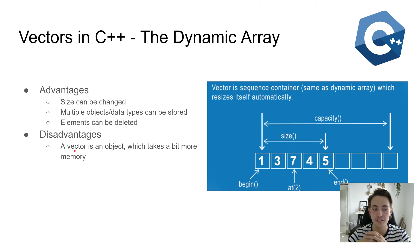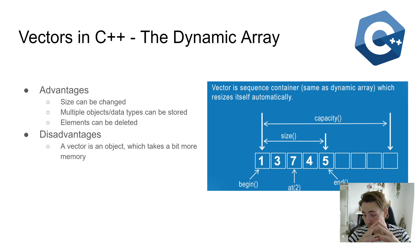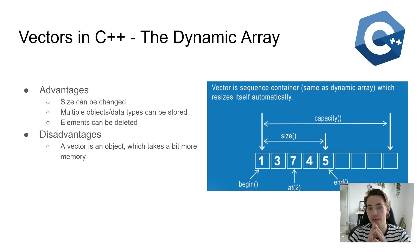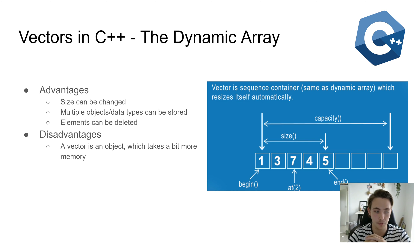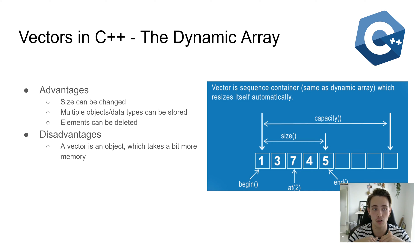One disadvantage of a dynamic array is that a vector is an object which takes up a bit more memory. When the vector changes its size and extends its allocated memory space — because we're resizing or adding elements — we have to move the whole vector and all its elements to another place in memory. That said, if you don't have a fixed size of data to store, a vector is a pretty good choice in C++.